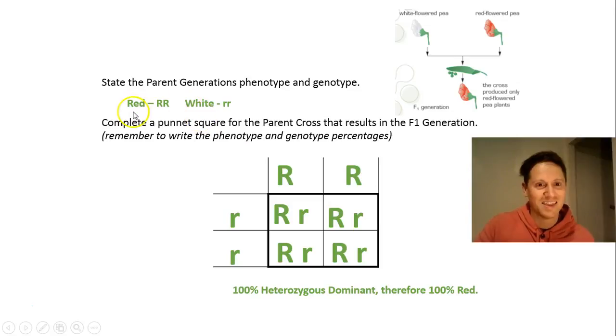So these were actually the final answers for the previous cross. This is how you would construct the cross if you were doing it in your books. You do the parent genotypes and then you have the offspring down here. And here we've got kind of a summary, 100% heterozygous dominant, big R, little r, 100% red flowers.